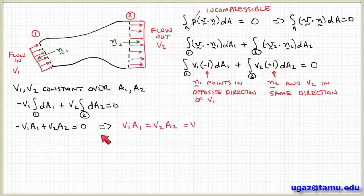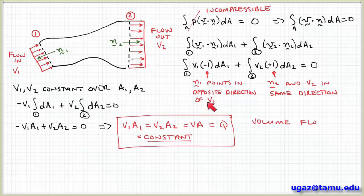So setting these two equal, I get an interesting result: V1 A1 equals V2 A2 equals VA. And so remember that the product of the velocity times the cross sectional area is the volume flow rate. Cubic meters per second.